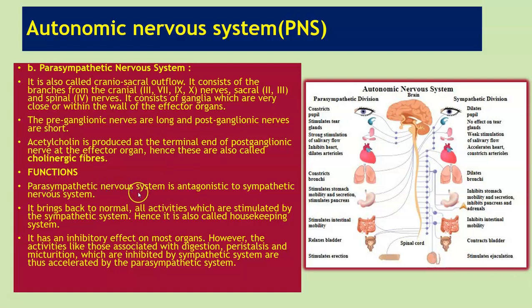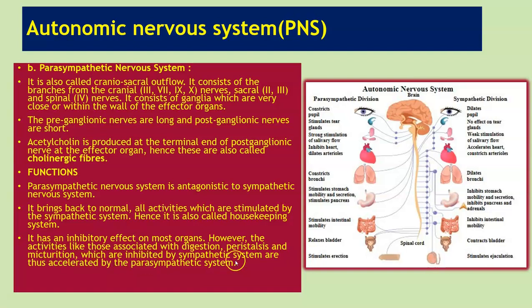The parasympathetic nervous system is antagonistic to the sympathetic nervous system — it has opposite actions. It brings back to normal all activities which are stimulated by the sympathetic system, and hence it is also called the housekeeping system. It has an inhibitory effect on most organs. However, activities like digestion, peristalsis, and urination — which are inhibited by the sympathetic system — are accelerated by the parasympathetic system.